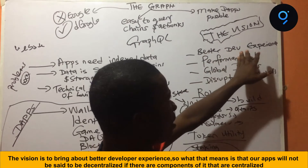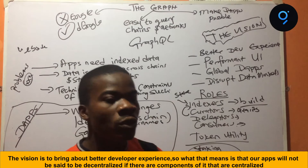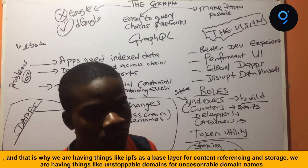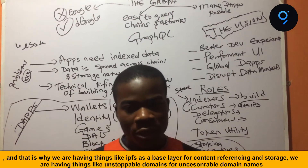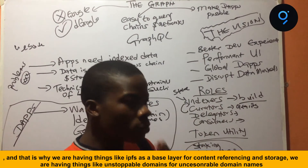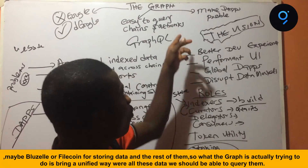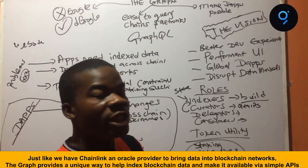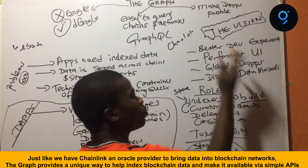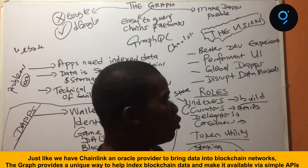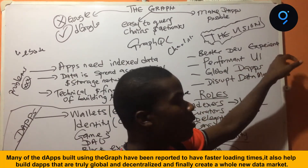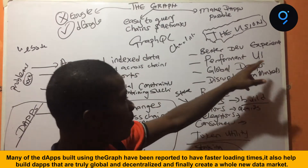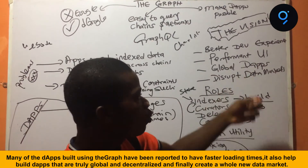So what is the vision? The vision is to bring a better developer experience. What that means is that apps would not truly be decentralized if there are components that are actually centralized. That is why we're having things like IPFS for the base layer of storage, unstoppable domains for domain names, and other stuff like Filecoin for storing data. So what The Graph is trying to do is bring a unified layer where we get all this data and are able to query it — just like Chainlink for oracles to bring information to the blockchain. Building with The Graph makes for faster loading times and more performant UIs.